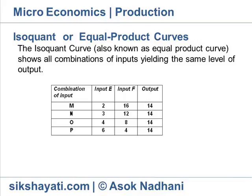Characteristics of isoquant: An isoquant is also known as a production indifference curve. An isoquant slopes downward to the right because a decrease in the quantity of one factor of production must be associated with an increase in the quantity of another factor of production,